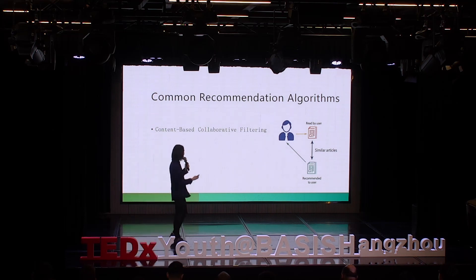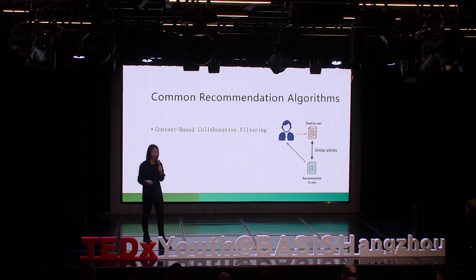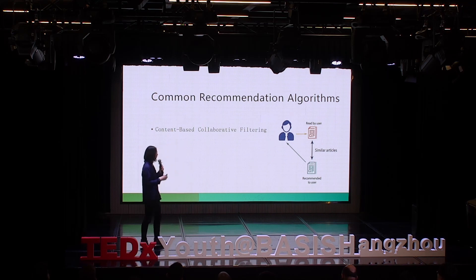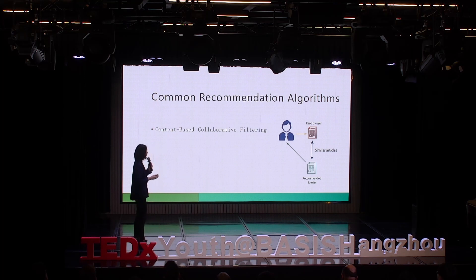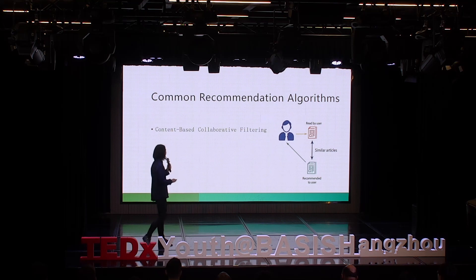As we can see in the picture, there's a user — a reader — and a book that has been read. We use a similarity matrix to find similar contents and similar articles, and finally recommend that similar article to the user.